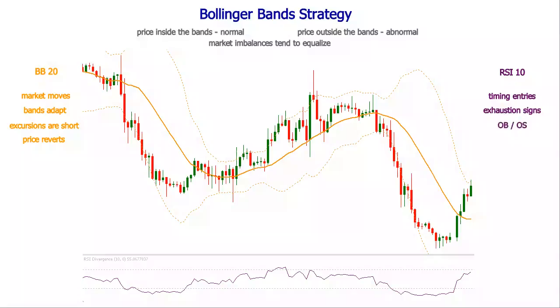Another way of highlighting the momentum decrease is finding the divergences. When the price makes lower lows and the oscillator is not, or when the price makes higher highs and the oscillator is not, the trend is showing weakness and the chances of a reversal are increasing.